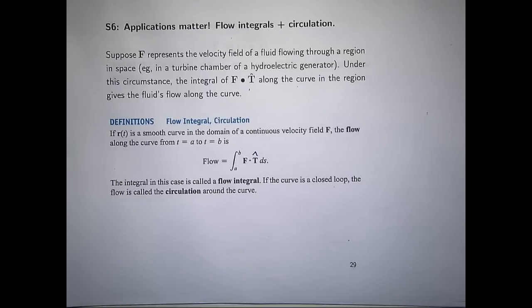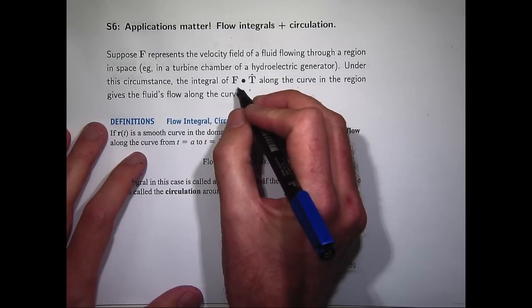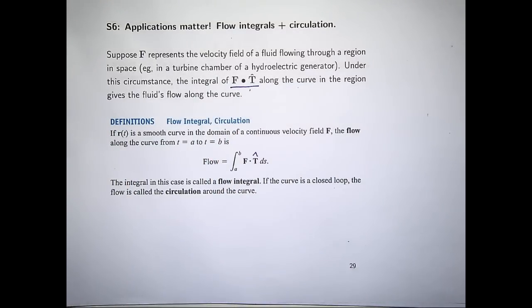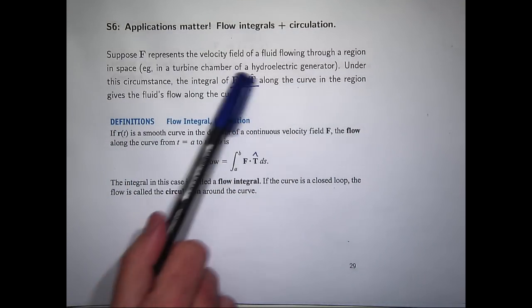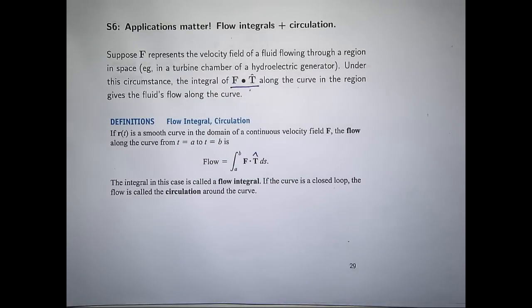Suppose that F is some velocity field of a fluid and you're moving through some region in space. The line integral under this circumstance, which is essentially just the integral of this over a curve, gives a measure of the fluid's flow along the curve.